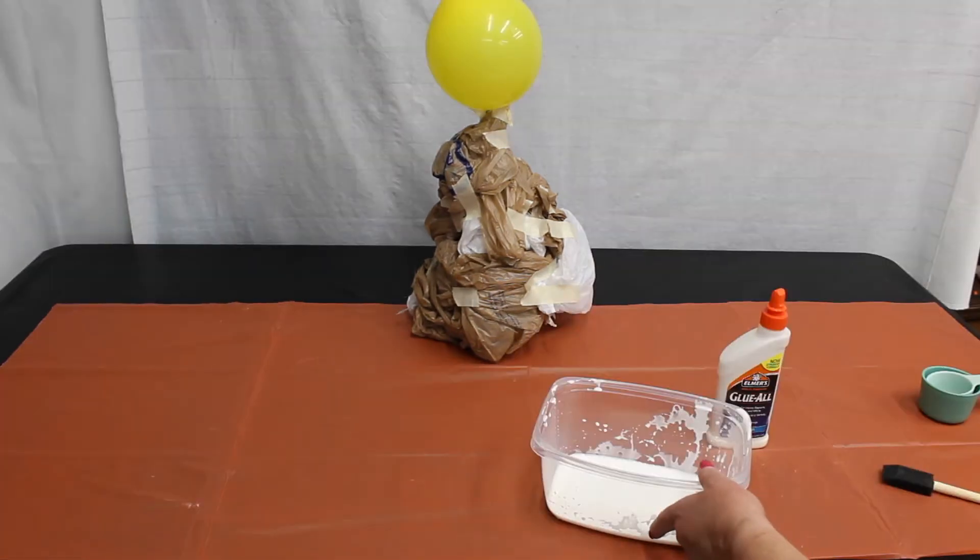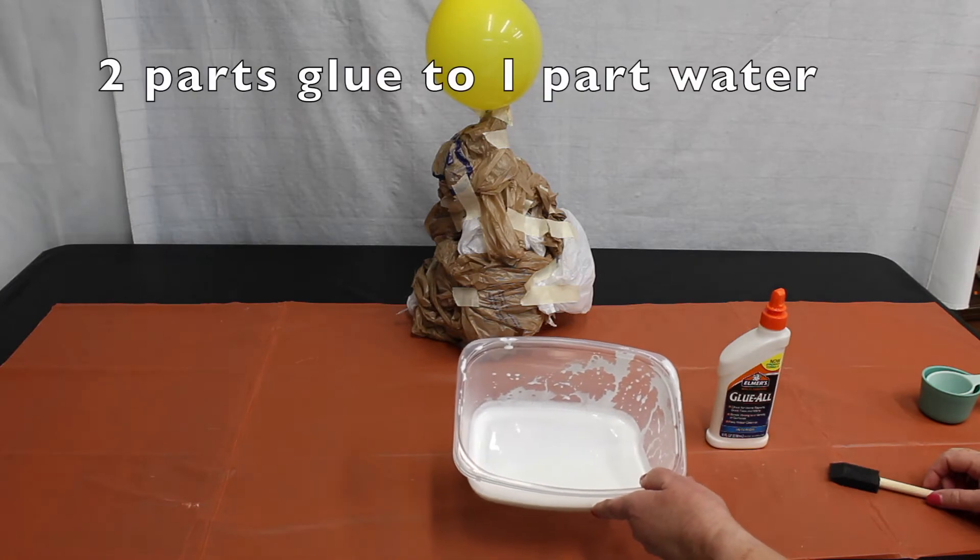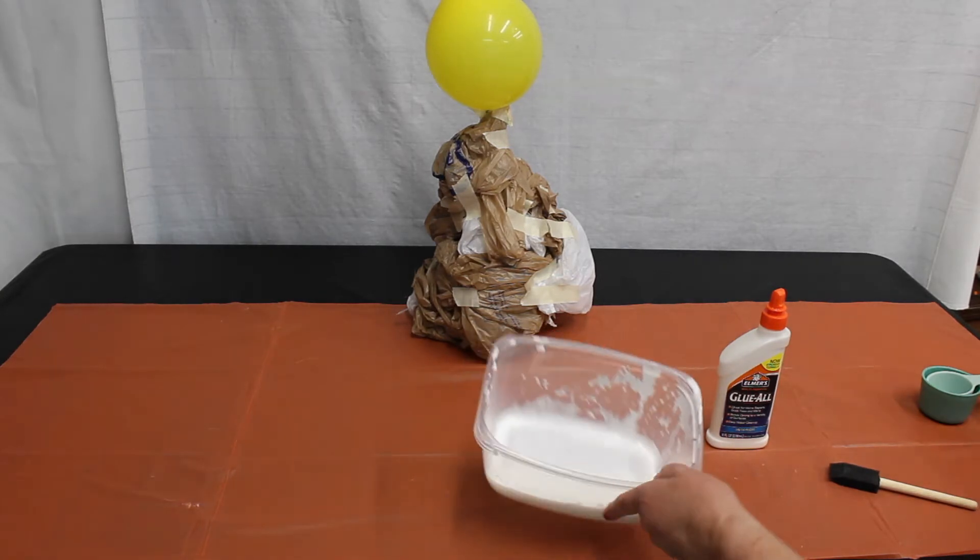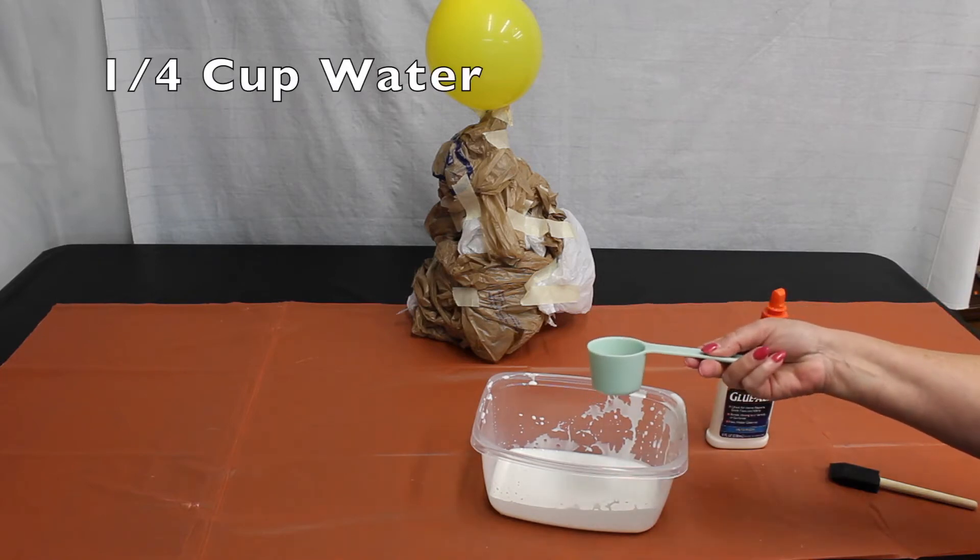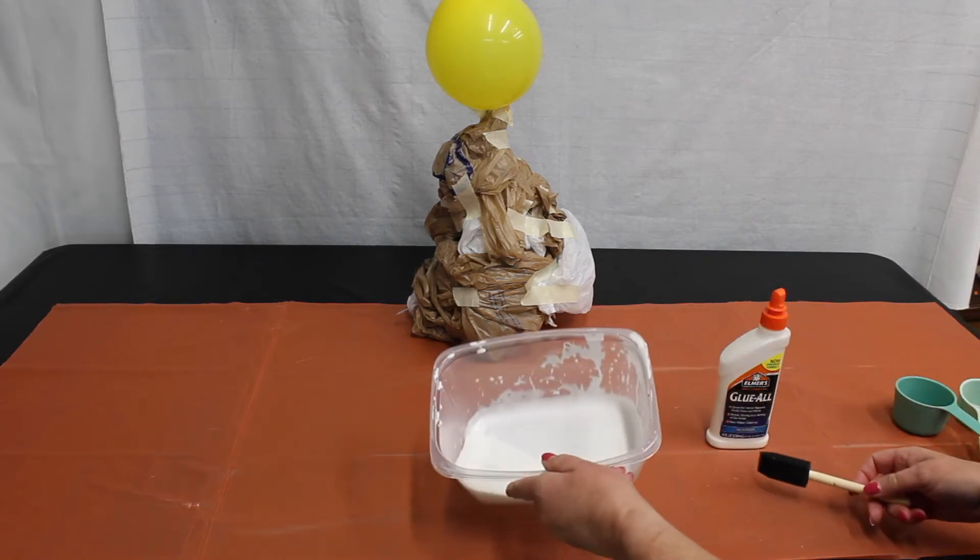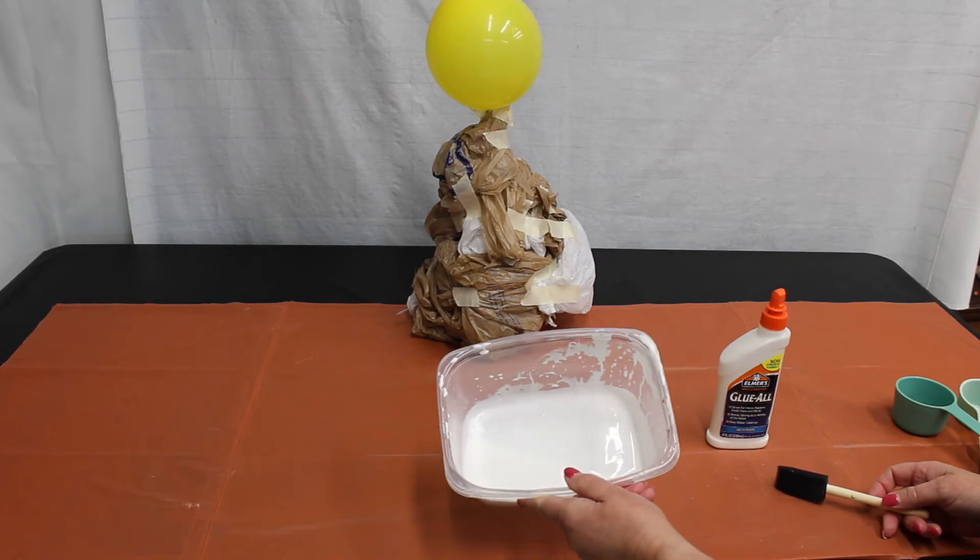Now you want to prepare your glue mixture. This is two parts glue to one part water. I put a half a cup of glue and a quarter cup of water. You can see how runny it is; it's not as thick as the normal glue.